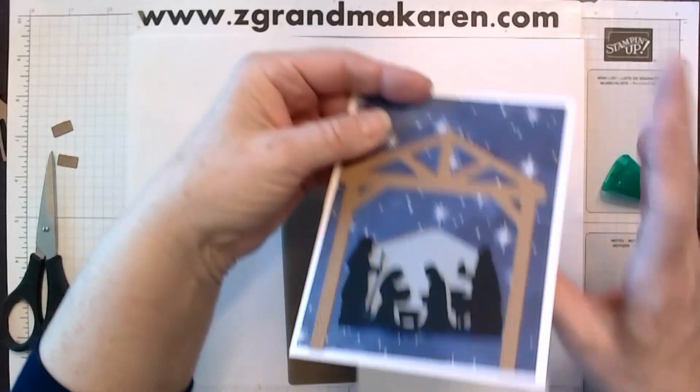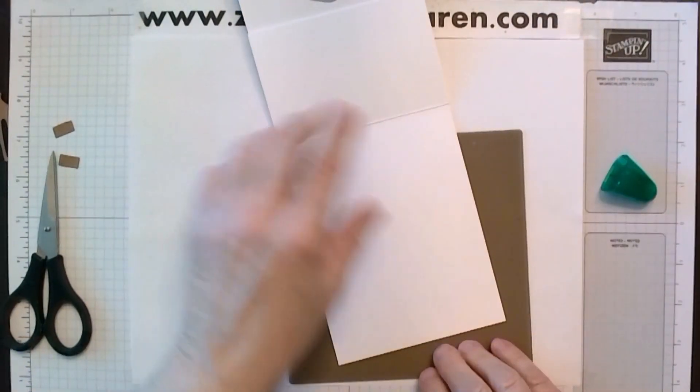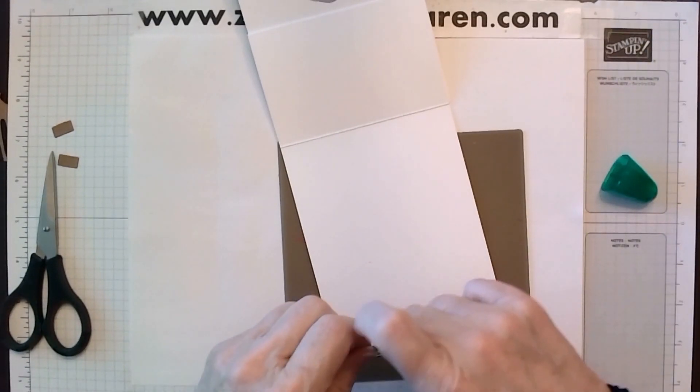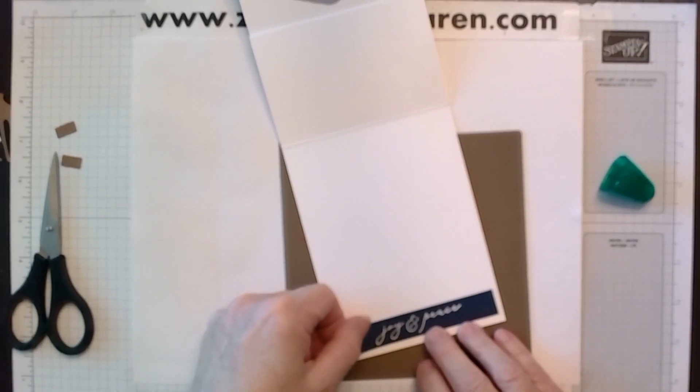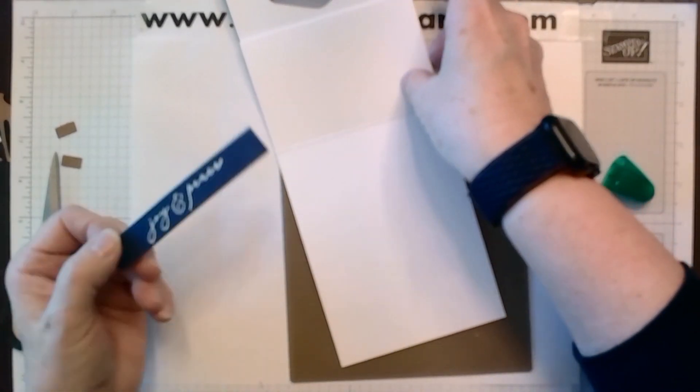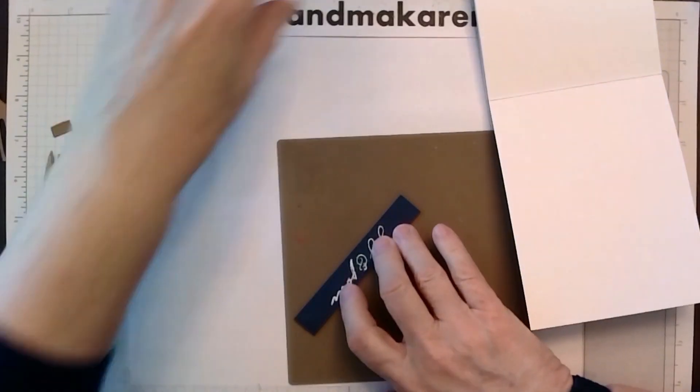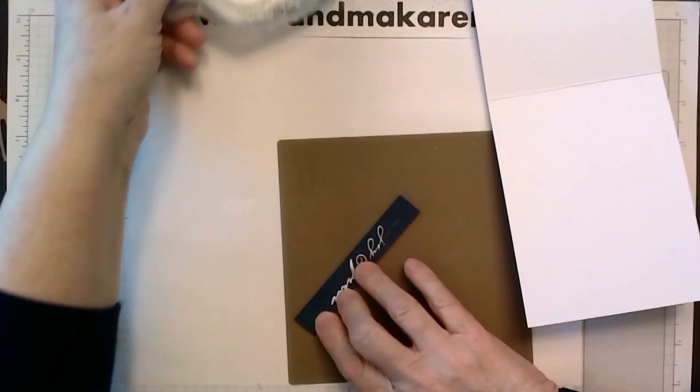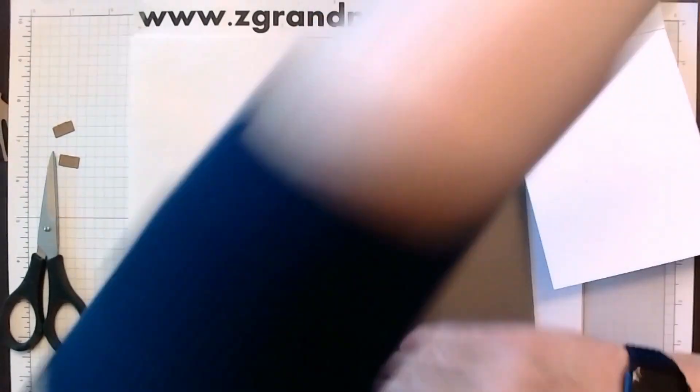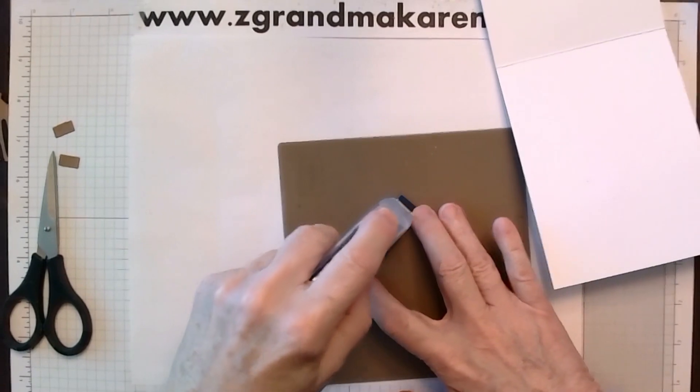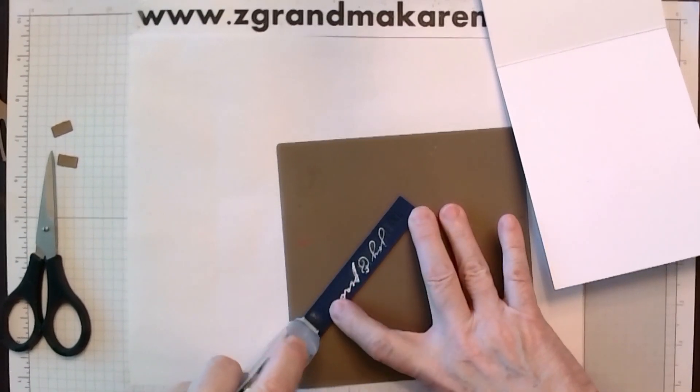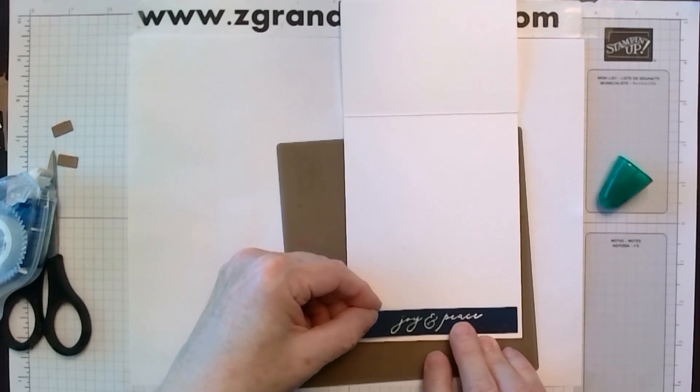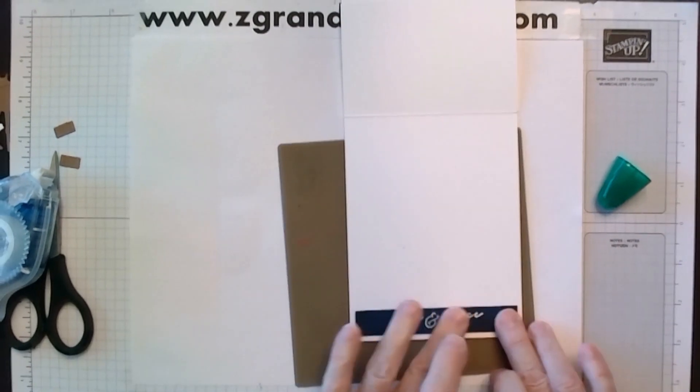The next step is, I'm just going to put this up. I already did the sentiment. And it is a five eighths by four. And we're putting that on first. And it just says Joy and Peace. It's in navy. And we're putting that along the bottom, again, leaving an eighth of an inch around three of the sides. Like so.